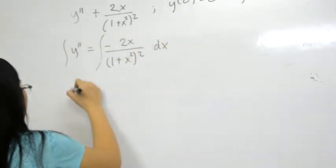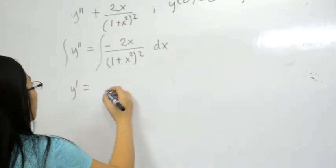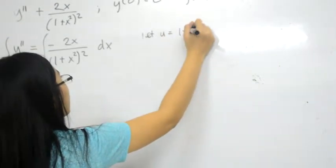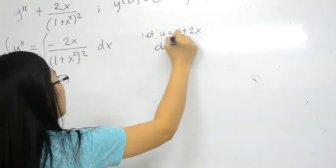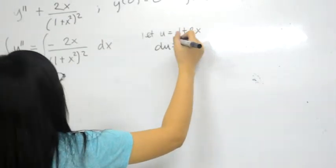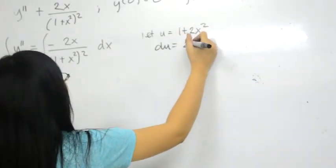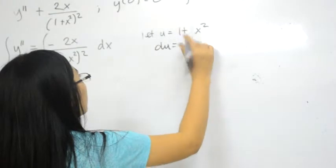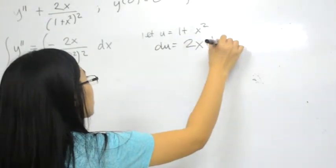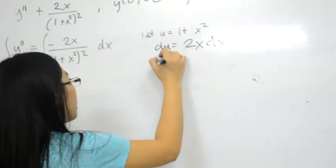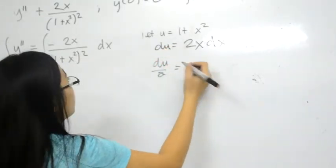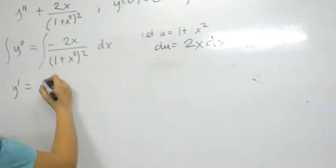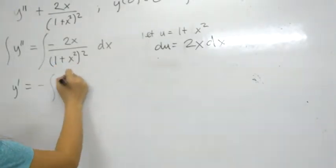we have y' is equal to... we have 2... let u equal 1 plus x², du is equal to 2x dx. So du over 2... plus 2 over this one, not this one. So we have negative 1 over u.